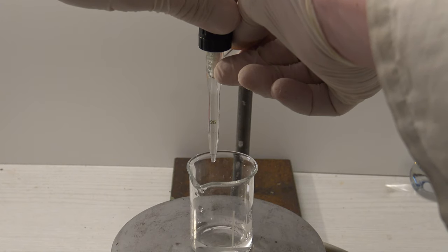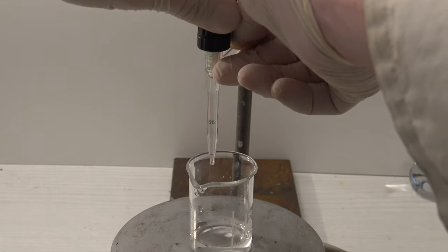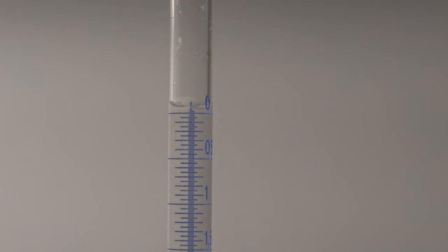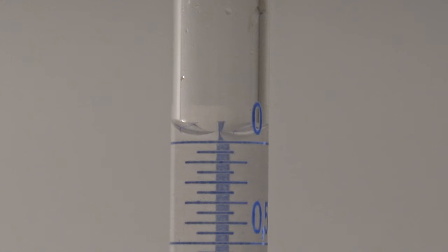Then the level of the solution can be adjusted to the highest marking. The meniscus causes the broad line on the back to taper, making it possible to read the values precisely.